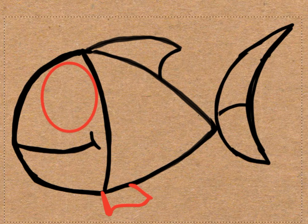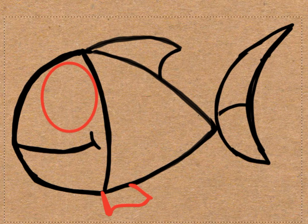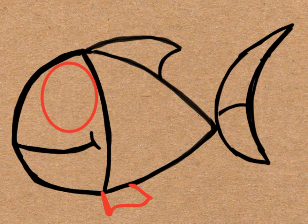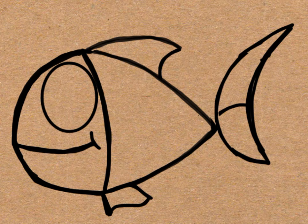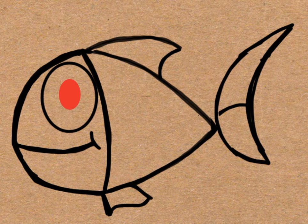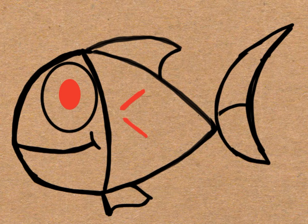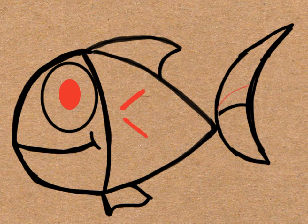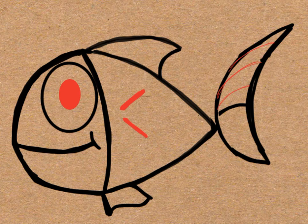And then draw an oval for the eye. Draw another oval inside the eye and fill it in. And then draw two lines for the fin, and then draw some curved lines in the back fin.